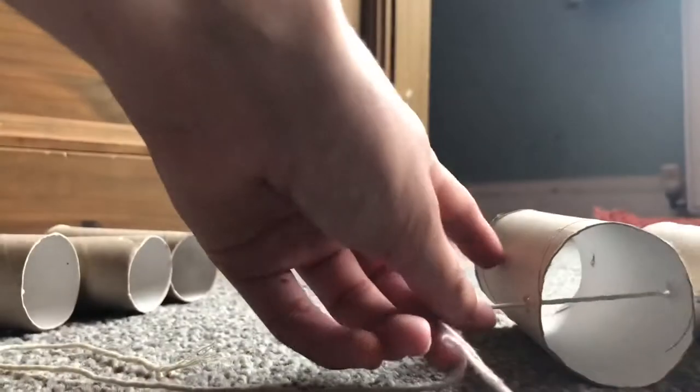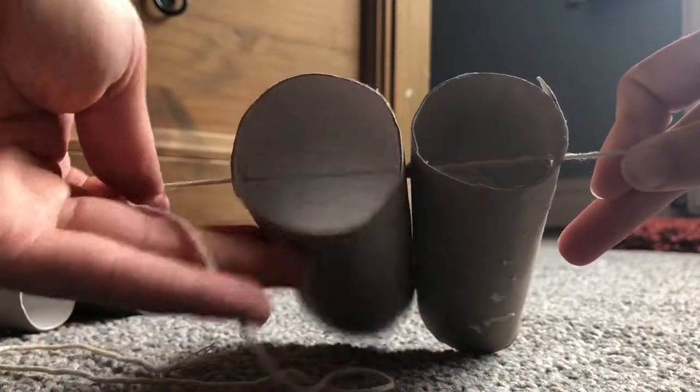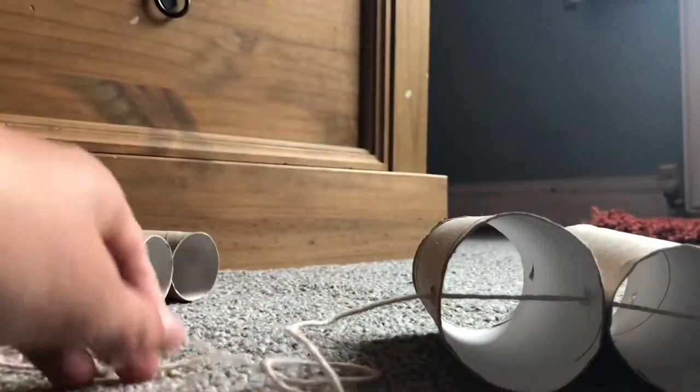This is what it should look like when you start threading the string through the toilet roll tubes. If you have a pen, you can use that to help push the string through the holes as it is kind of fiddly.